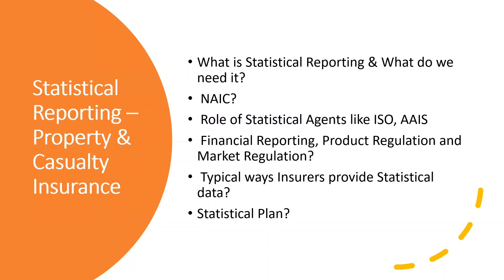So we have discussed what statistical reporting is, its purpose, what NAIC means, and the roles of statistical agents. Now, what kind of data do we need to send to the Department of Insurance? The first critical data is financial data. Every year you need to send your financial data, including your existing premiums and your overall balance, so that the Department of Insurance can make sure you are not going to miss claim payments in case of a loss.